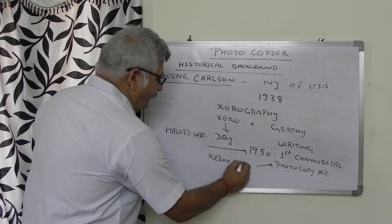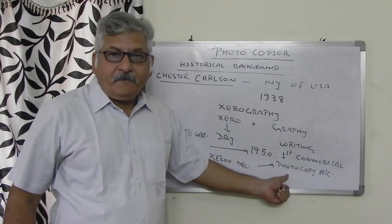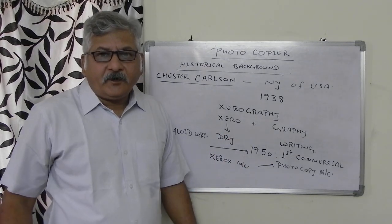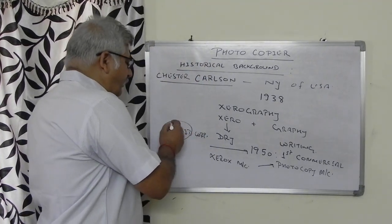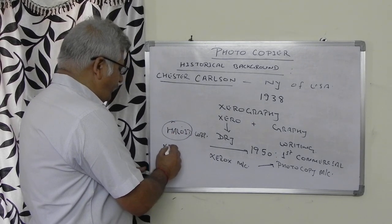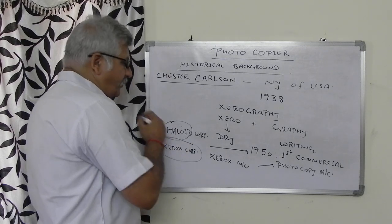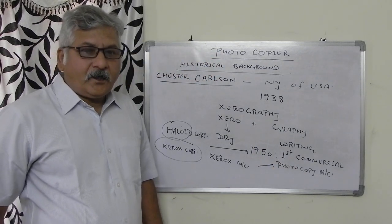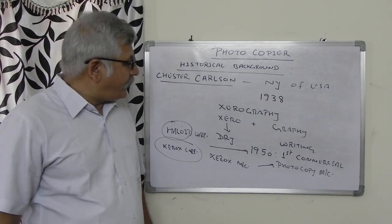The Haloid Corporation gave the name 'Xerox machine' to that photocopy machine. That photocopy machine became a huge hit in the market, and finally the Haloid Corporation changed its name to Xerox Corporation due to the huge success of this photocopy machine. This is the history of the Xerox machine and how it came to market.